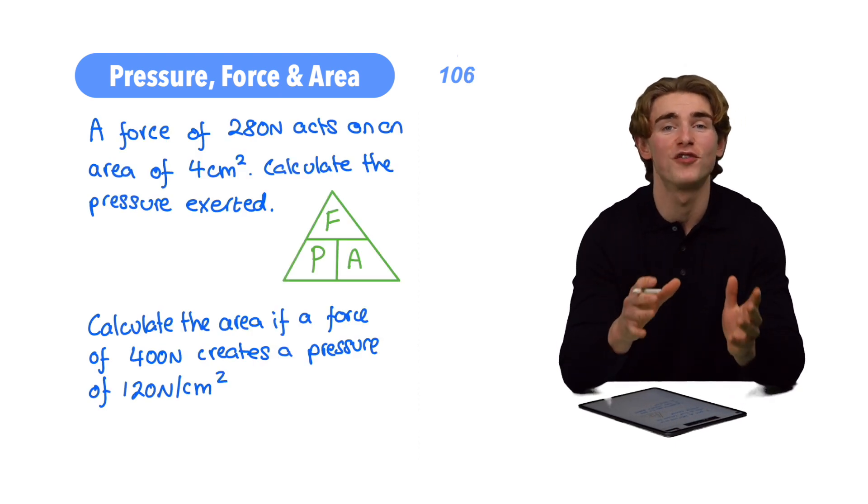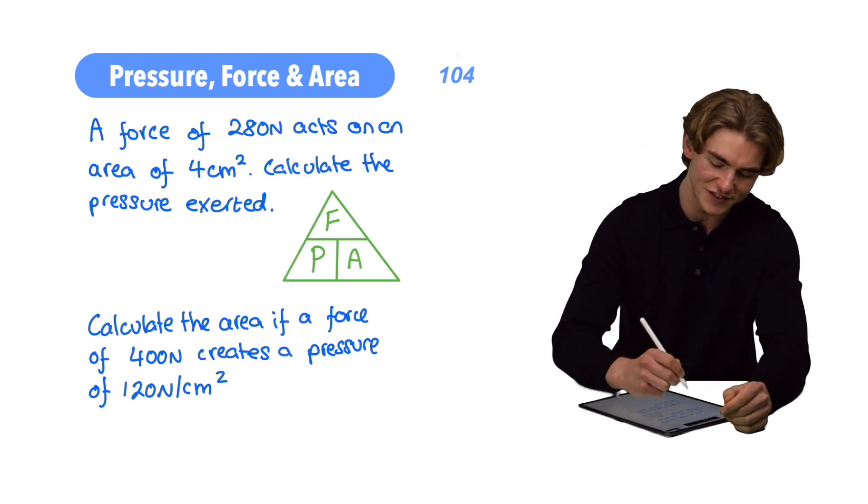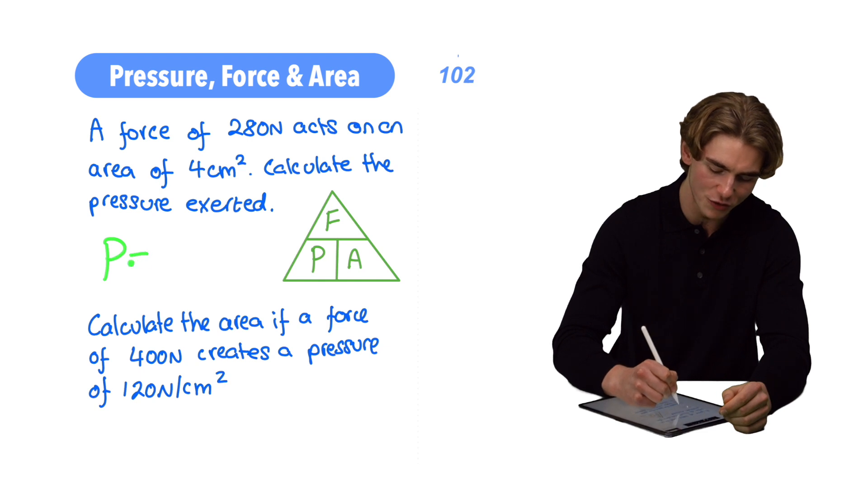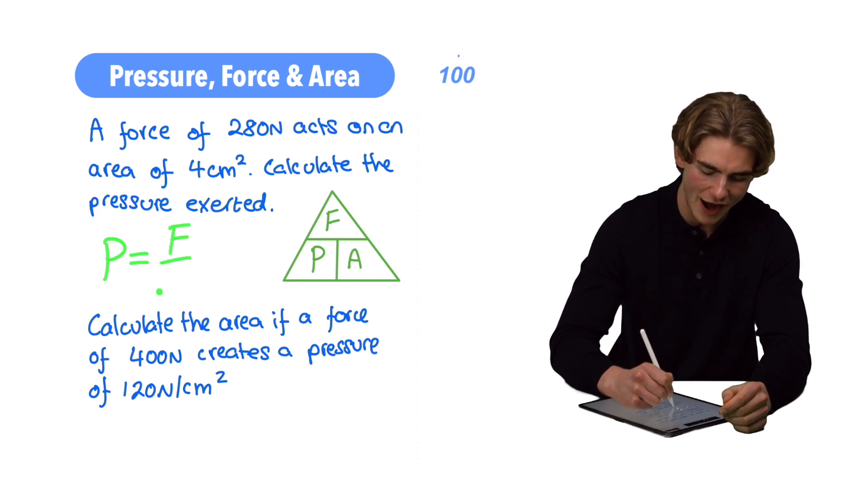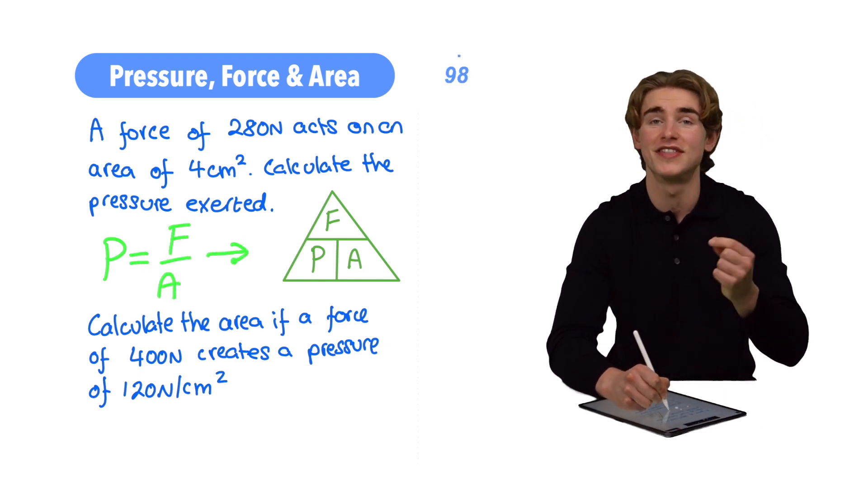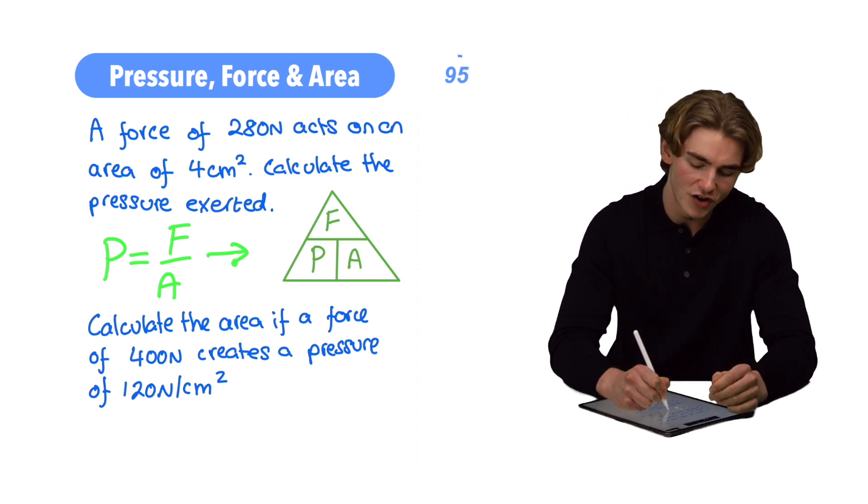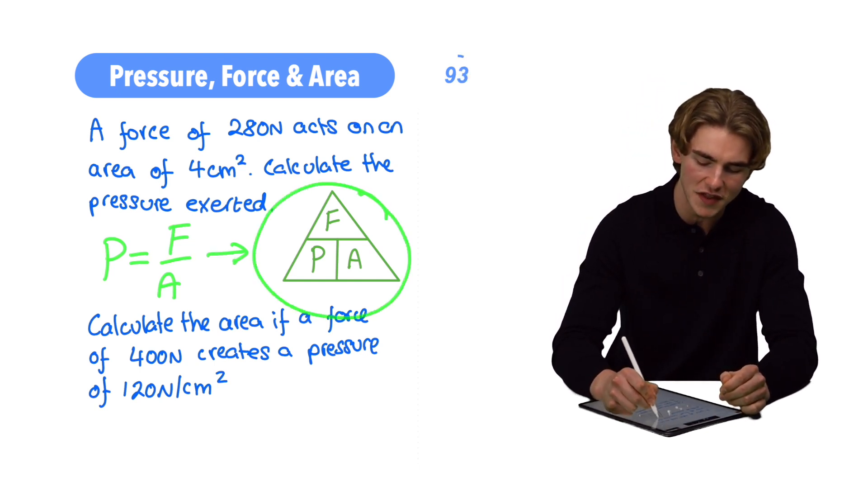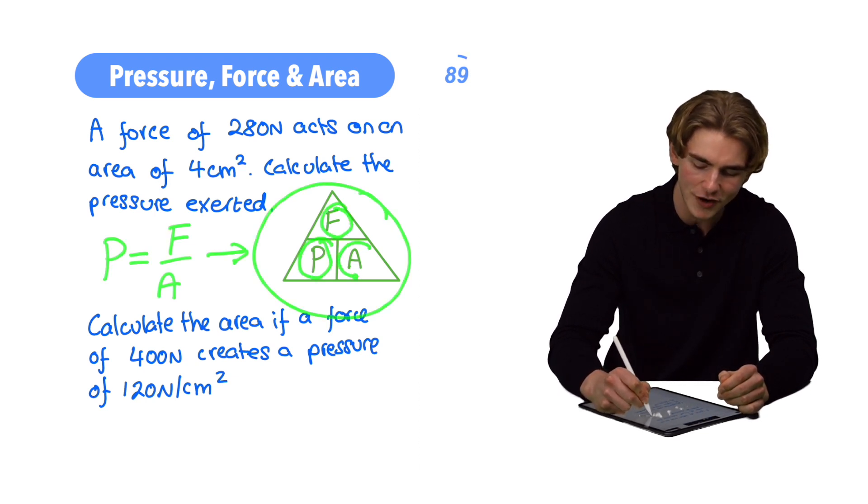When it comes to working with pressure, force, and area, the key formula is that pressure equals force divided by area. Just like with density, mass, and volume, and speed, distance, and time, we can convert this into this handy triangle on the right, which has pressure in the bottom left, force on the top, and area on the bottom right.